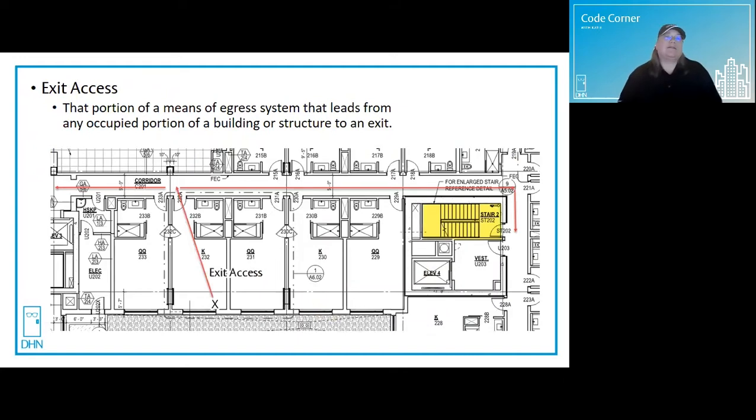The exit access is that portion of a means of egress that leads from any occupied portion of a building or structure to an exit. The exit is highlighted in yellow. The exit access from any room or space, you can see the X follow that path. Once you get into the hallway, the corridor, you're still in part of the exit access until you reach the door at the stair or the door that leads directly to the outside.